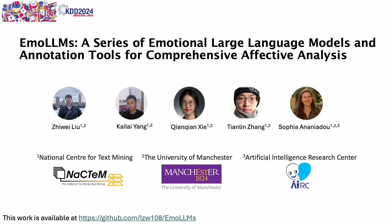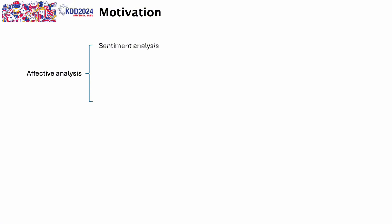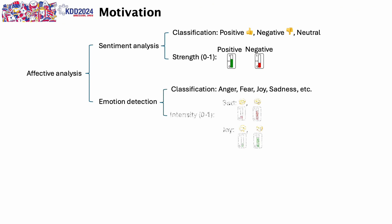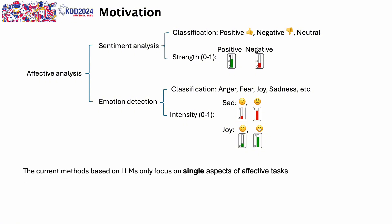This video is about EMOLLMs, a series of emotional large language models and annotation tools for comprehensive affective analysis. Affective analysis can be divided into sentiment analysis and emotion detection. Sentiment analysis contains polarity and strength tasks, while emotion detection includes classification and emotion intensity tasks. However, current methods based on LLMs only focus on single aspects of affective tasks.